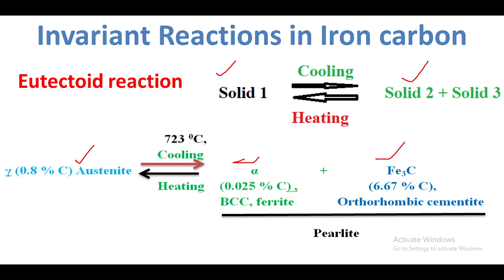The alpha ferrite structure is a BCC structure. Alpha ferrite contains 0.025 percent of carbon. Cementite contains 6.67 percent of carbon. So the alpha ferrite plus cementite structure is called pearlite. Alpha ferrite plus cementite is called pearlite composition. This is the eutectoid reaction.